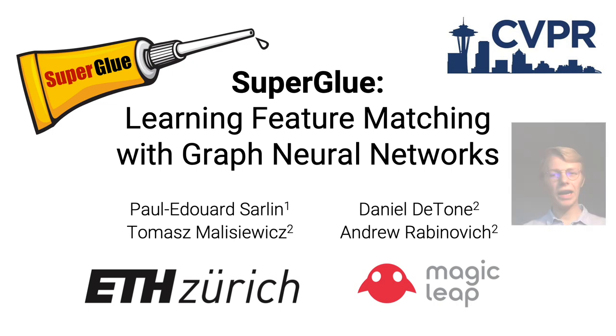Hi, my name is Paul-Edouard Sarlin. I am a PhD student at ETH Zurich and will now present our paper SuperGlue: Learning Feature Matching with Graph Neural Networks. This work was carried out at Magic Leap as my master's thesis in collaboration with Daniel DeTone, Tomasz Malisiewicz, and Andrew Rabinovich.